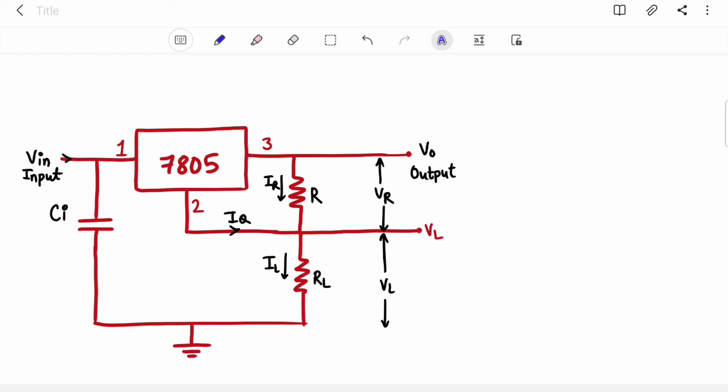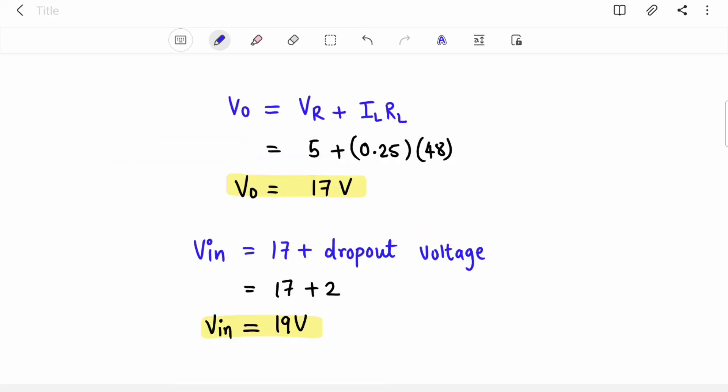And the last step you have to do is to draw the circuit again and fill up the values. So R is 20 ohms. RL is 48 ohms. Then this IL is 0.25 ampere. This output voltage is 17 volt. Input voltage is 19 volt minimum. And this input capacitor you can assume anything. 0.33 microfarad can work. So you have to calculate the values and you have to draw the diagram again. I hope you have understood how to convert a voltage regulator into current source.